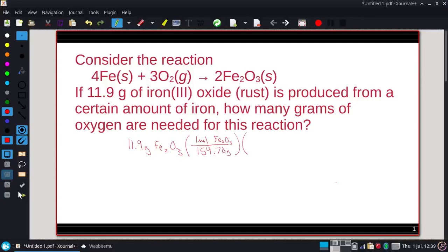Alright, and our balanced equation tells us that there are 2 iron(III) oxides for every 3 oxygens. And 1 mole of oxygen is 32.00 grams.